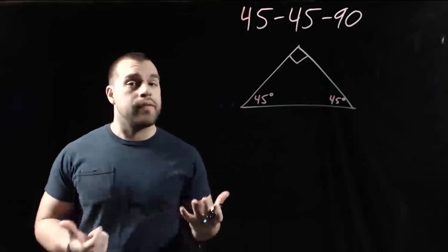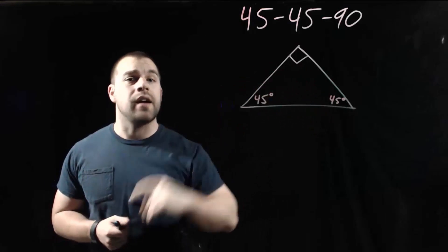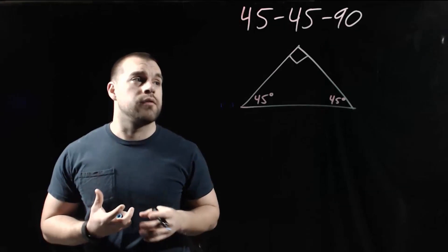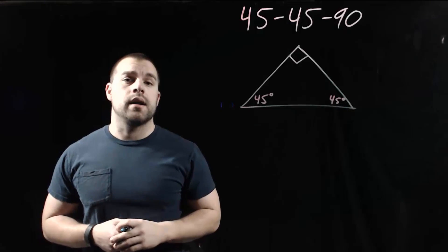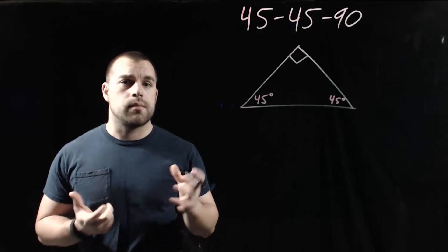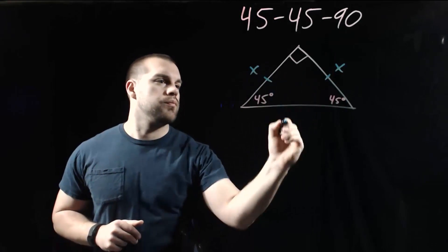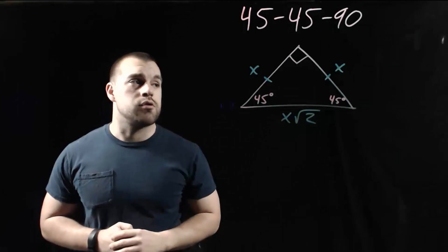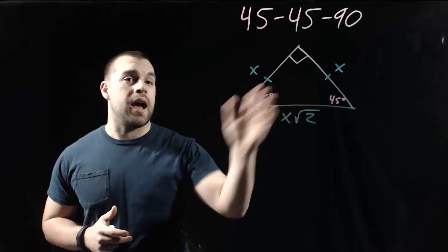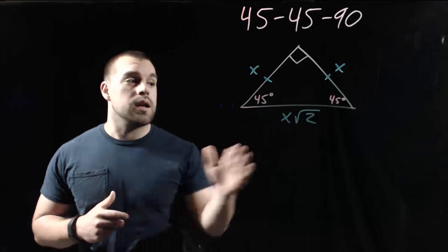So here we have a picture of a 45-45-90 triangle drawn out, and what those numbers represent are the angle measures within this triangle. We're mainly focused on a special relationship between the side lengths. In our 45-45-90 triangle, we represent the legs with an x value, and then the hypotenuse across from the 90-degree angle is x root 2.